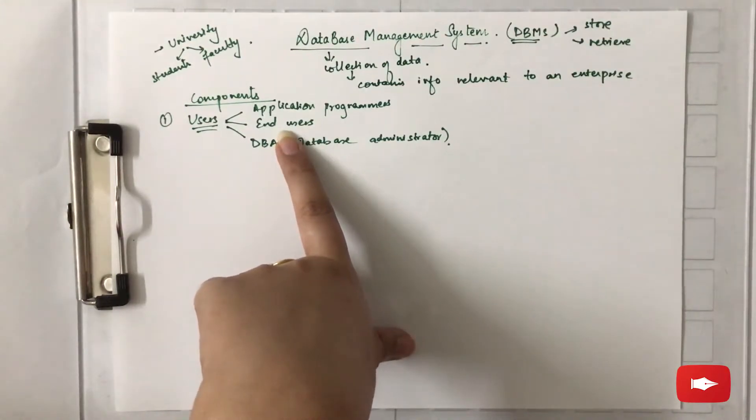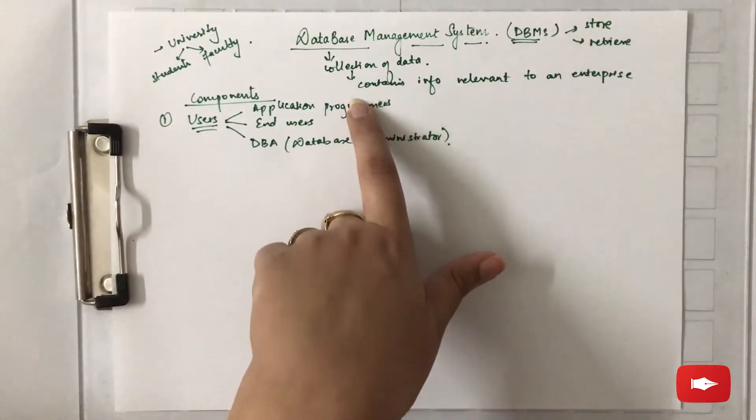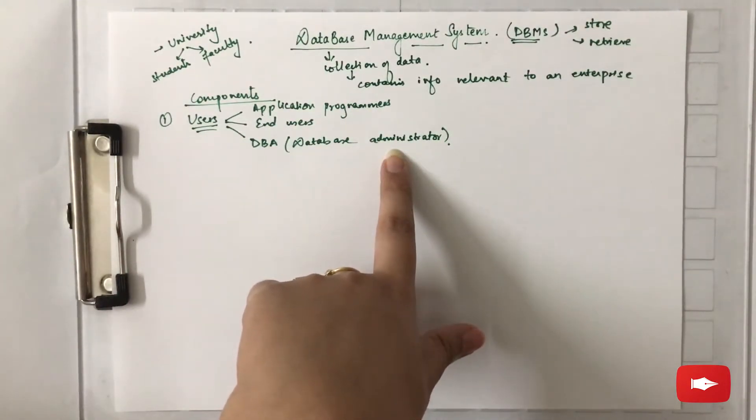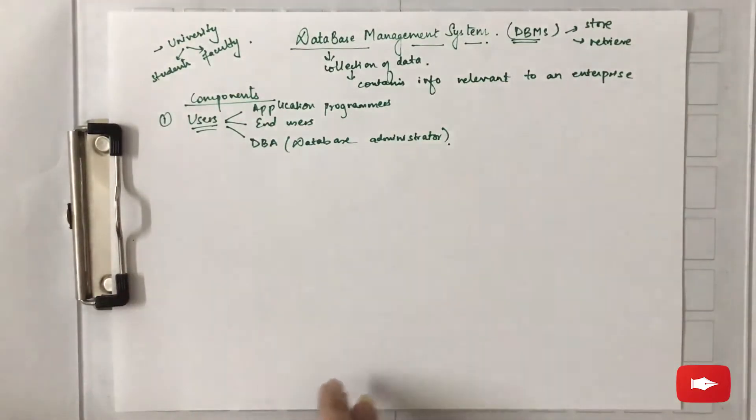When we talk about end users, end users have access to the database, but that can only be done using a query language or through the programs that were developed by application programmers. Third is the DBA, that is database administrator, and this user is responsible for the design, construction, and maintenance of a database.